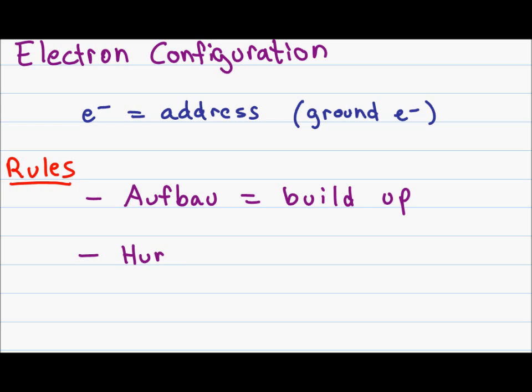The next rule we'll look at is Hund's rule. What Hund's rule tells us is that when you have multiple sub-orbitals, for example, we'll look at the px, py, and pz. You can put up to six electrons into the p orbital, but the order that you put them matters.